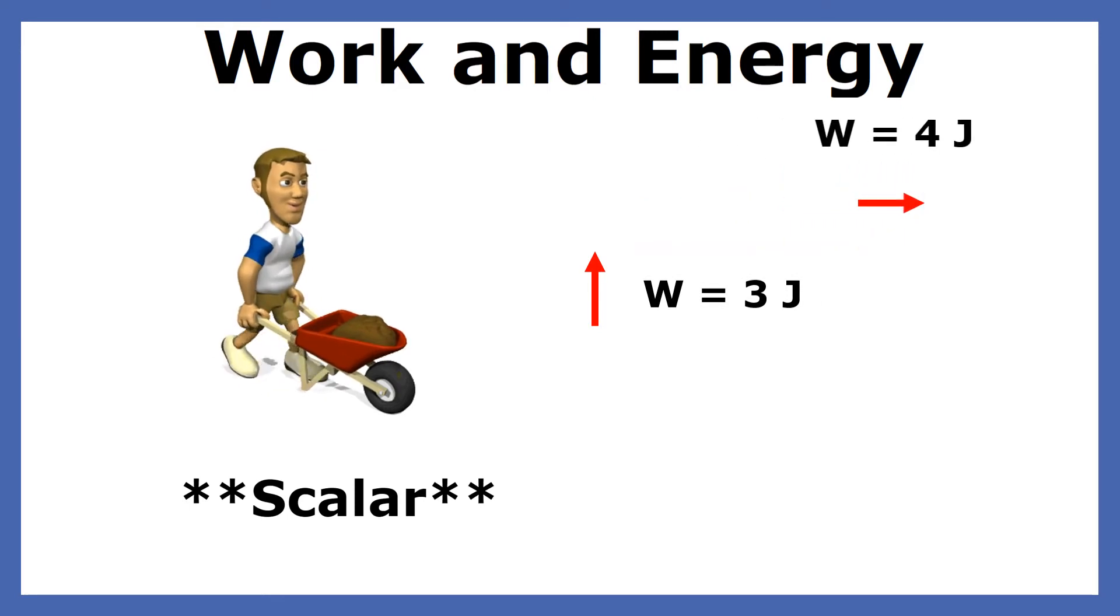Work is a scalar, not a vector. If three joules of work is done pushing a box north, and another four joules is done pushing the box east, the total work is seven joules. Even though the first work is perpendicular to the second, we don't use the Pythagorean theorem to add them as we would do if work were a vector.